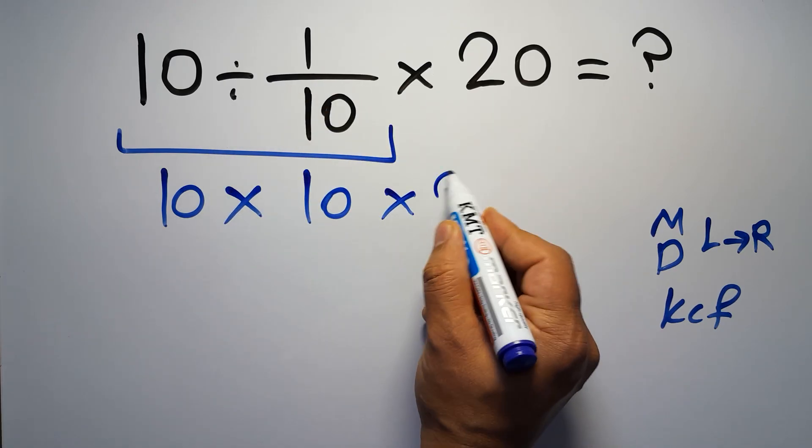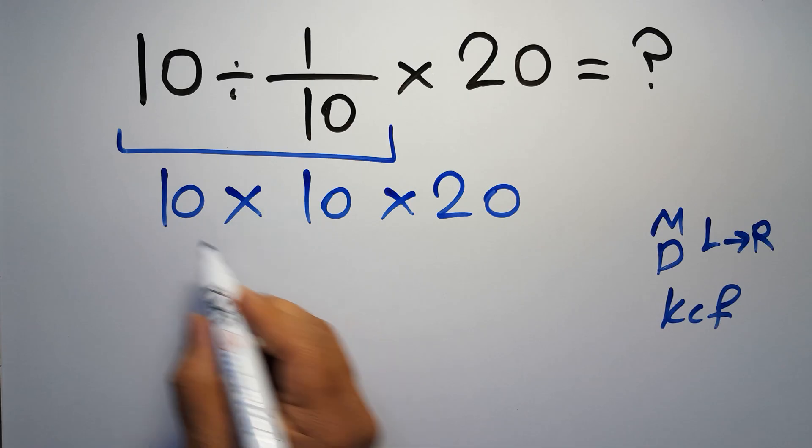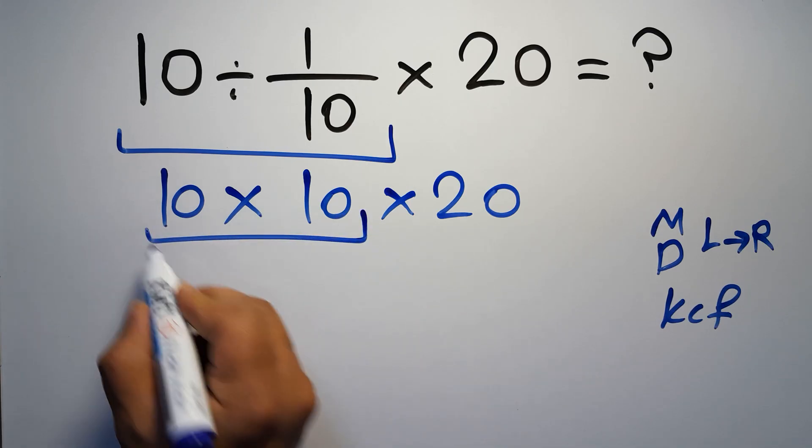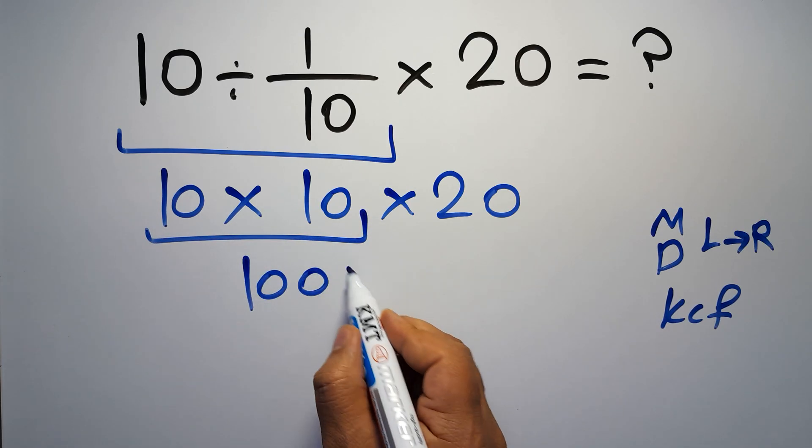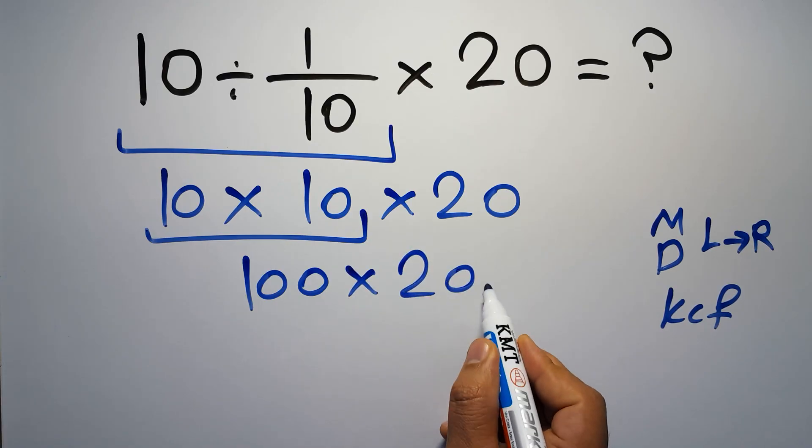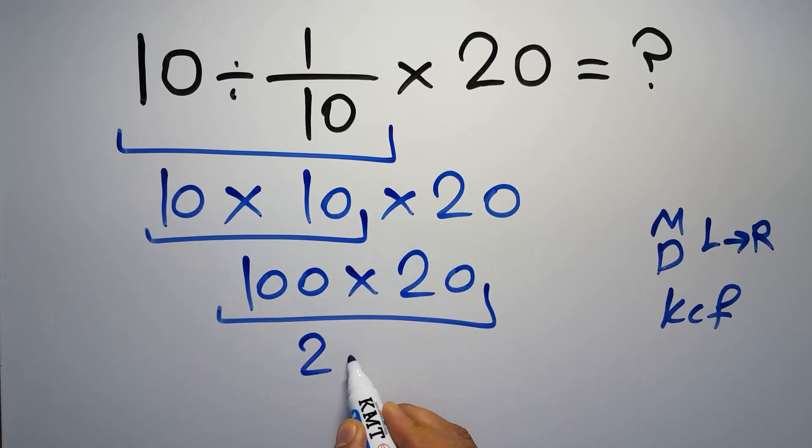Then times 20. 10 times 10 gives us 100, and 100 times 20 equals 2,000.